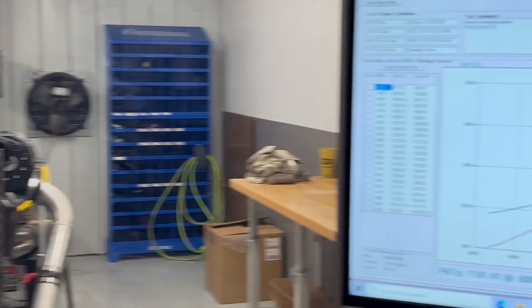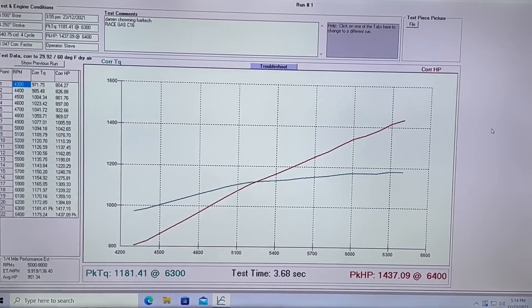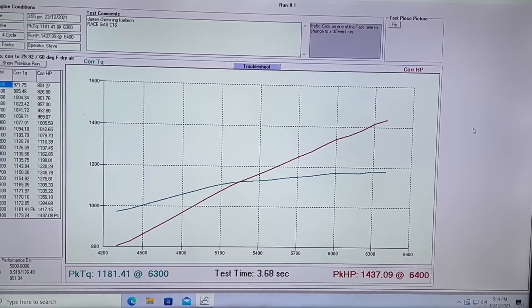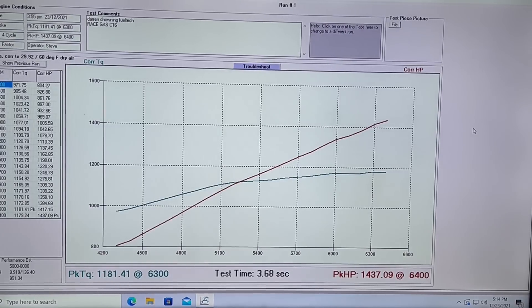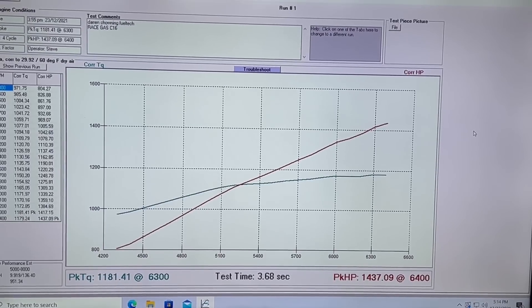All right, let's take a look at our race gas graph here. So we made 1,437 at 6,400 and 1,181 at 6,300. Not revving it out super far. It's just a hydraulic roller. You know, our Stage 1 Big Black stuff is all hydraulic. So this is on 17 pounds of boost.